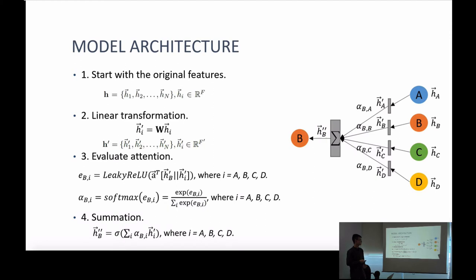Because we have the outputs h_a', h_b', h_c', h_d' from the linear transformation, and the attention weights for each pair, we multiply and sum them together — attention times representation for each neighbor. Then we apply the sigmoid activation function to this summation to get the representation for B, h_b''. This is the complete computation for this small part.